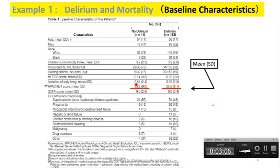We all know how to use the mean, but I want to see how many people know how to use the number in parentheses — that is the standard deviation. For the mean of 25.6, the standard deviation was 8.1. What does it mean? Standard deviation tells you the variance — how dispersed the data are. But how do you actually use this number?